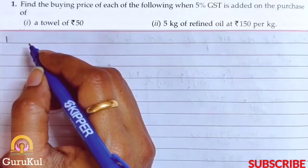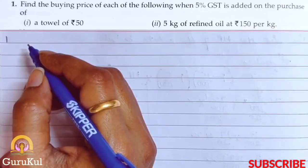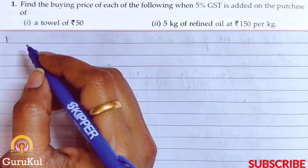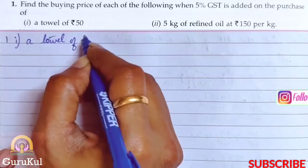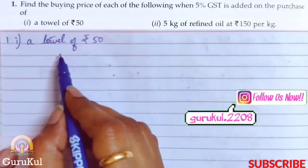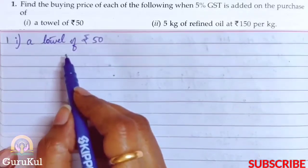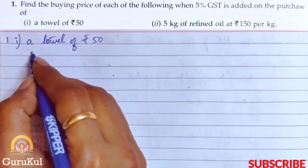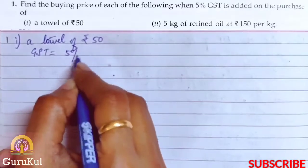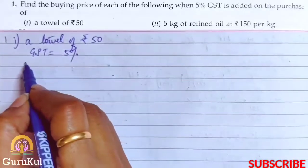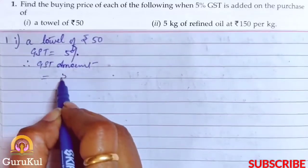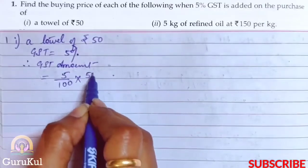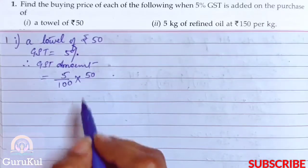Now Question 1 of Exercise 7.4. We need to find the buying price of each of the following when 5% GST is added on the purchase. The first part is a towel costing ₹50.50. GST is equal to 5%. Therefore GST amount is equal to 5% of ₹50.50.